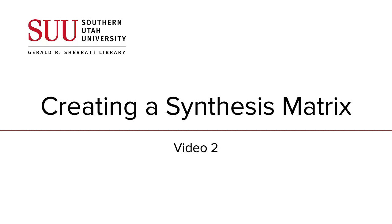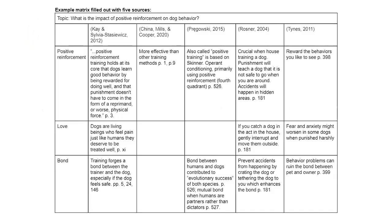This video was created by librarians at Southern Utah University. It is the second in a series on synthesizing information. This video discusses how to create a synthesis matrix. A synthesis matrix is a grid that helps you organize ideas from your research. It aids you in making connections and in identifying the scholarly conversation.